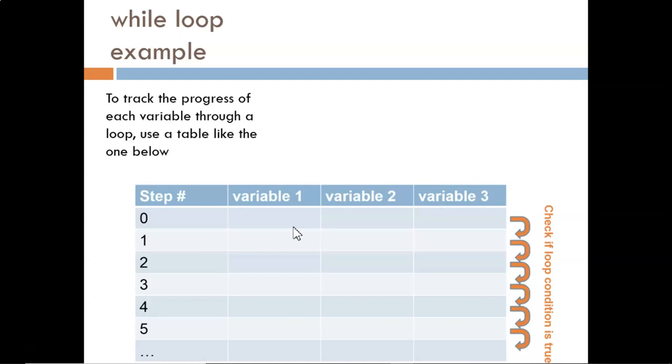We begin with a generic table. The leftmost column simply lists which step we are on. The other columns will be filled in with actual variable names. The note on the right reminds us that the condition must be true in order to continue the loop for each next row. And the dot dot dot at the bottom reminds us that this table could have any number of rows depending on how many times we go through the loop.